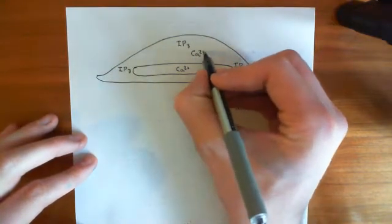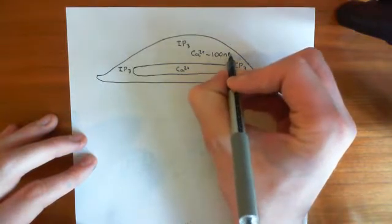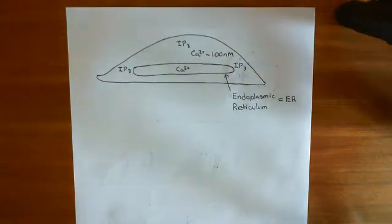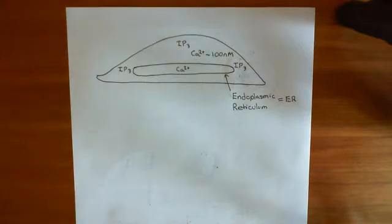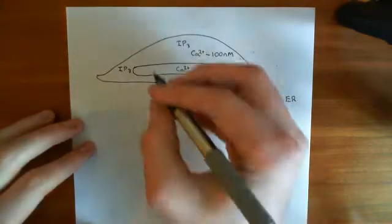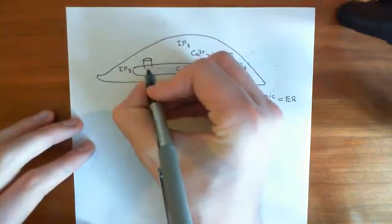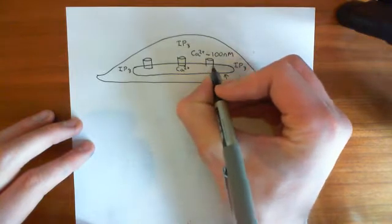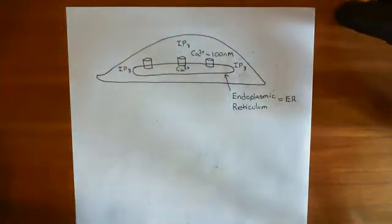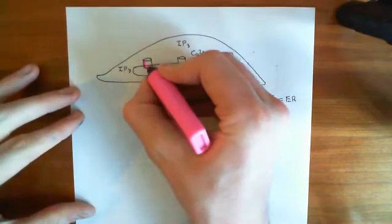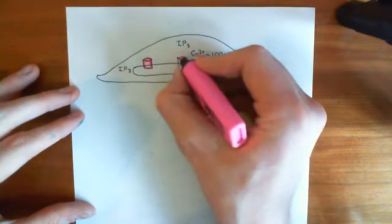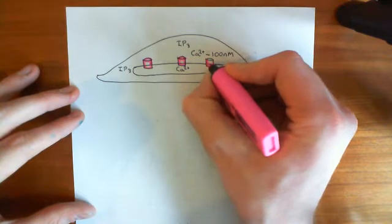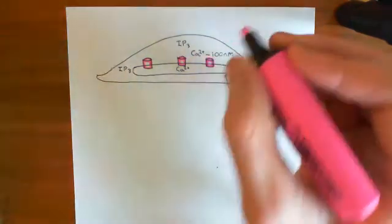The calcium concentration in the cytoplasm of the cell is very, very low — generally around 100 nanomolar. You can trigger major changes inside the cytoplasm by raising calcium concentration, and you can raise it considerably by releasing calcium from intracellular stores. In the membrane of the endoplasmic reticulum, there are receptors for IP3, known as the IP3 receptors, shown here as pink structures in the ER membrane.